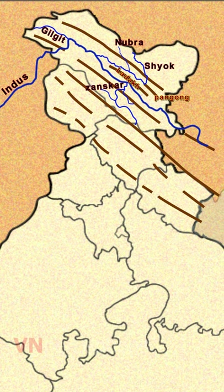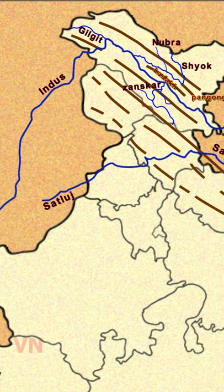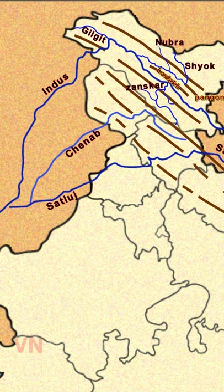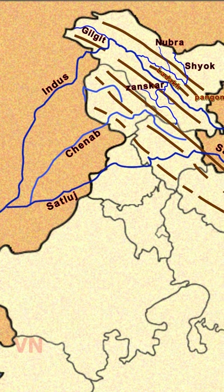The major tributaries of Indus are: first, River Satlaj, which is the longest tributary of Indus. It originates in the Rakshastal Lake of Tibet, passes through Himachal Pradesh and Punjab, and then confluences with Chenab to form the Panjanad River. Then there is River Jhelam, that rises from Berinag Spring at the foot of the Pir Panjal, drains the Kashmir Valley, flows through Srinagar and Bular Lake, and finally enters Pakistan to join Chenab River.